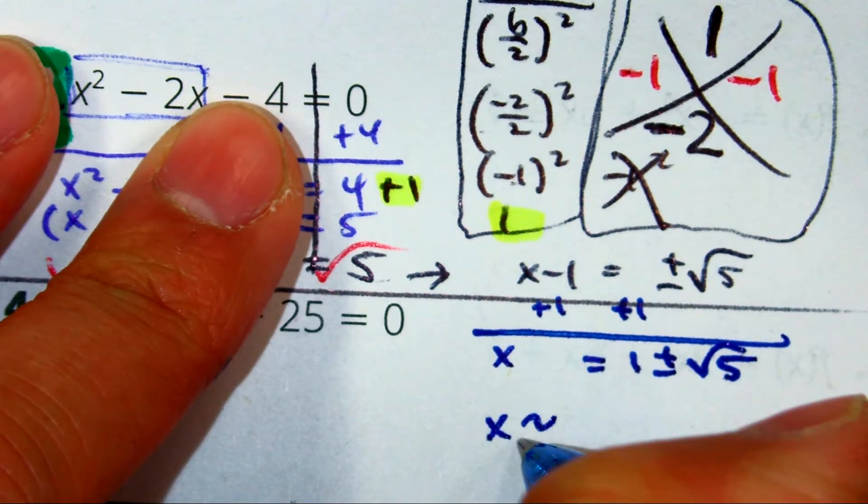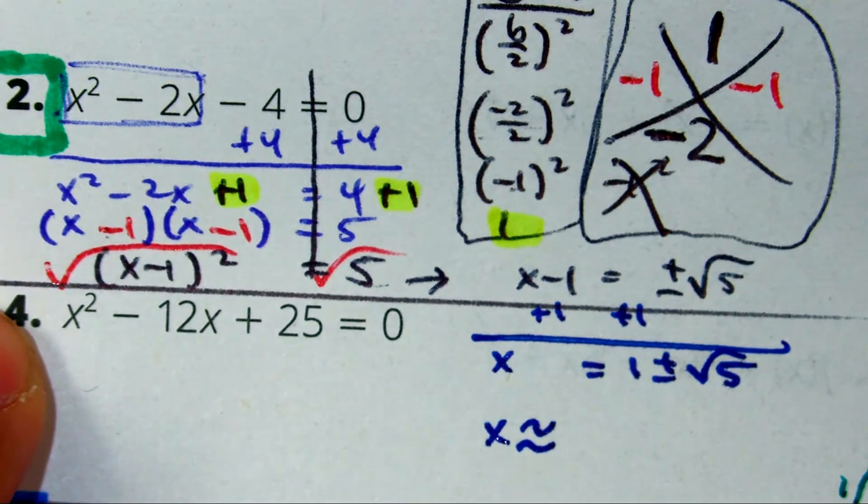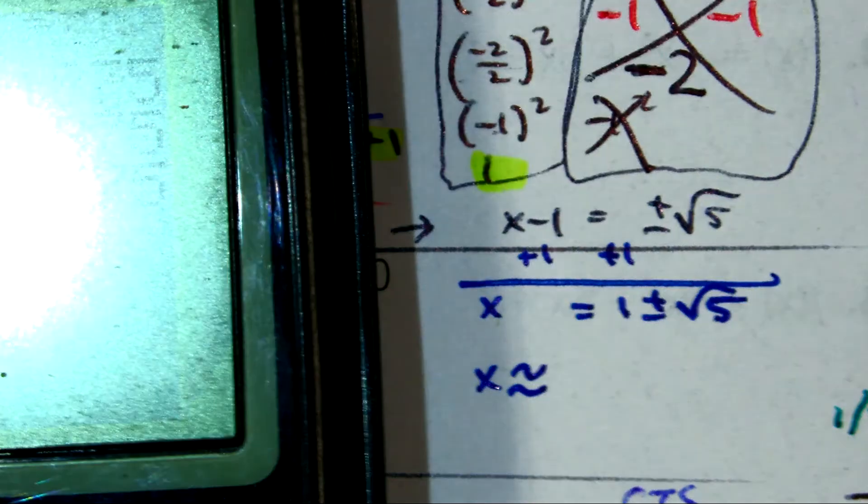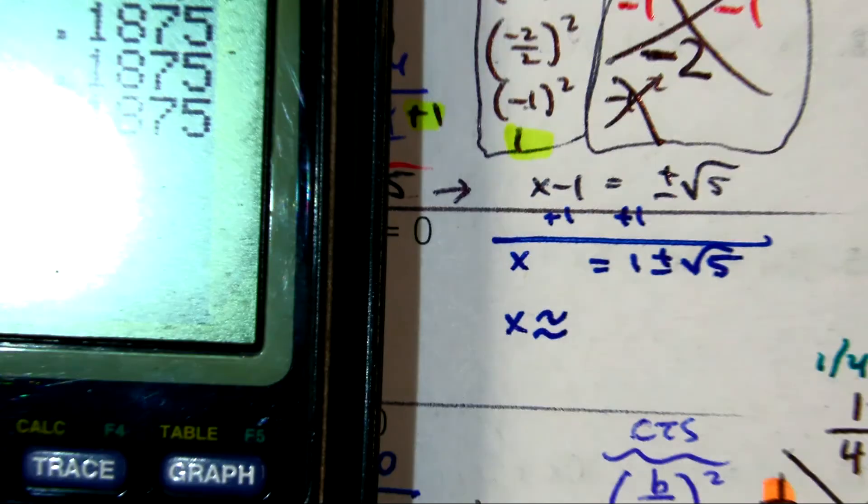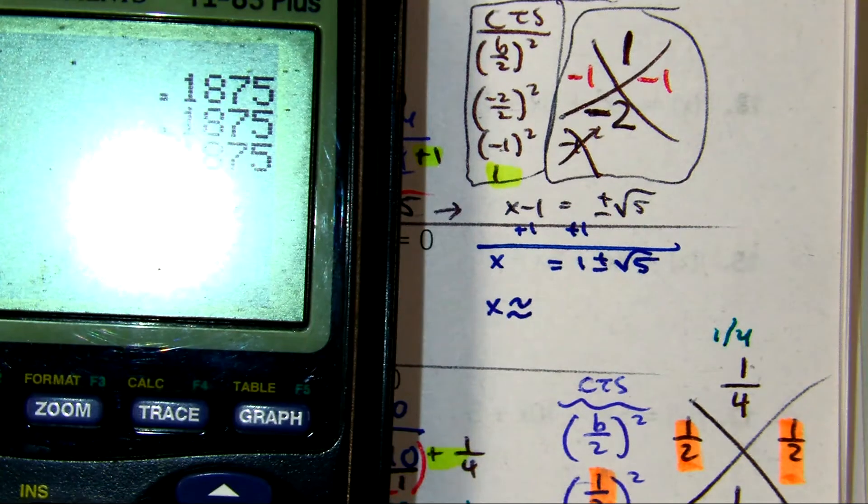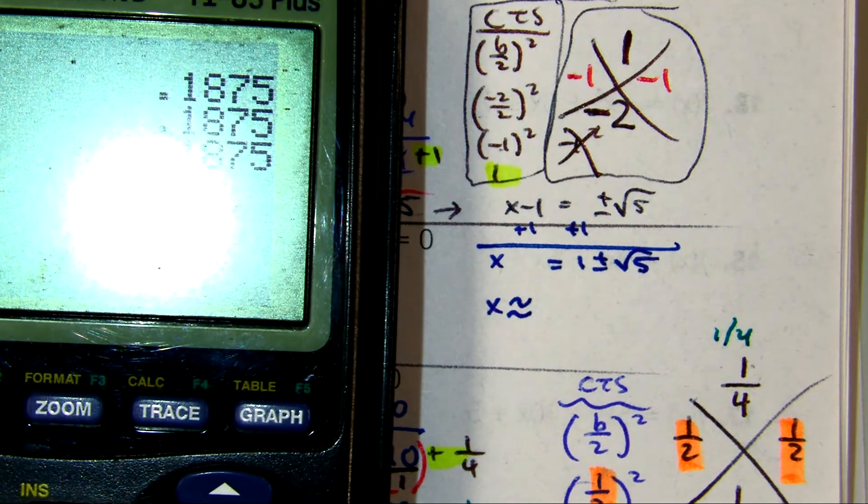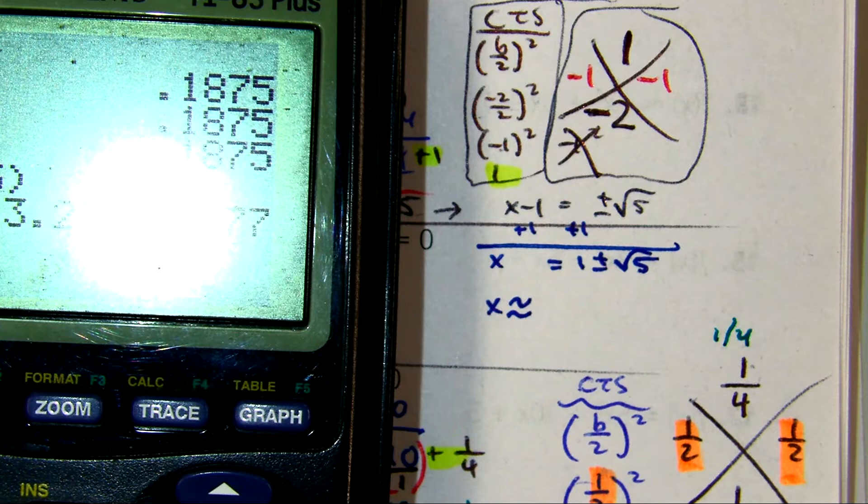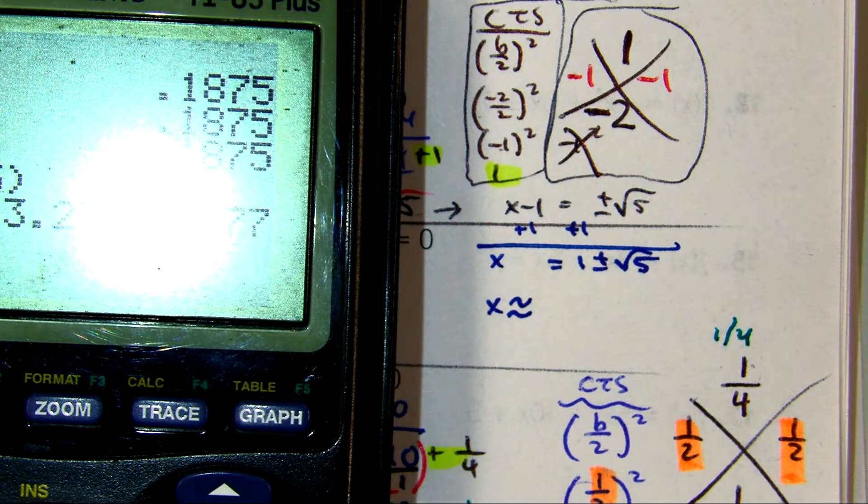Let's put that into our calculators. 1 plus radical 5, 3.24.